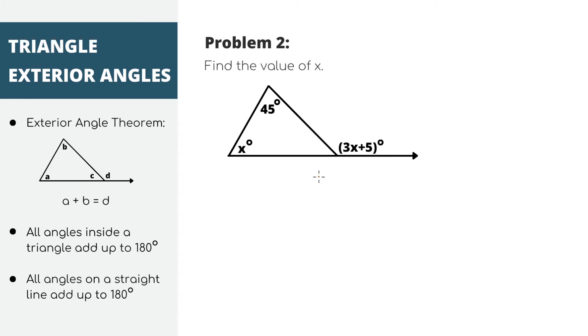Alright, problem 2. We can use the same idea that these two interior angles add up to the exterior angle out here. There's just more x's in this problem. x plus 45 equals 3x plus 5. If we simplify this equation, we'll get that 40 equals 2x. Dividing both sides by 2, we'll get x equals 20 degrees, which is our answer.